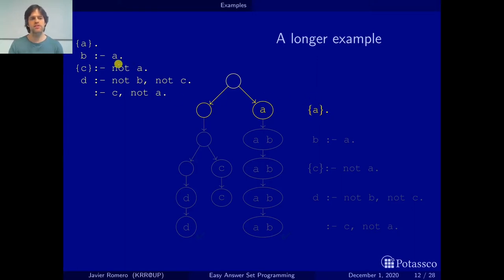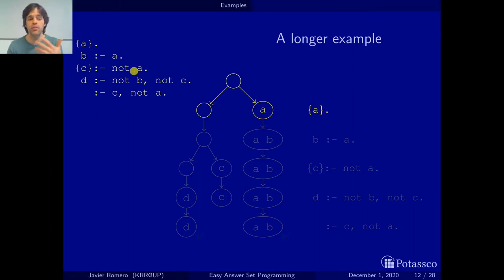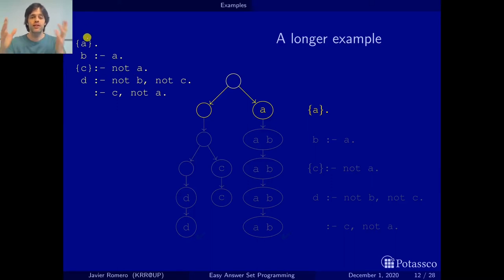Now comes the interesting situation: we can apply the rule 'B if A', because the rules that have A in the head have already been applied. There are no rules left to apply that have A in the head. The same applies to the choice rule on C — the rules for A have already been applied, so there are no rules with A in the head left to be applied.